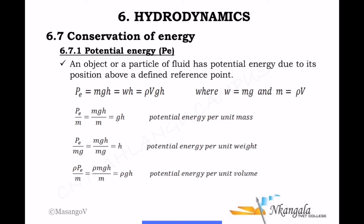Since mg is weight, we can replace mg by W. Since mass is density times volume, we can replace mgh by W times g multiplied by h. We sometimes want to know the potential energy per unit mass, so we divide the equation by mass, giving PE/m = mgh/m = gh. Similarly, potential energy per unit weight is found by dividing by mg, which leaves just h.